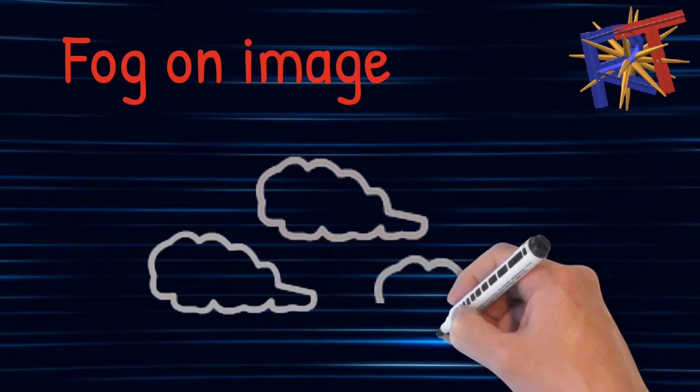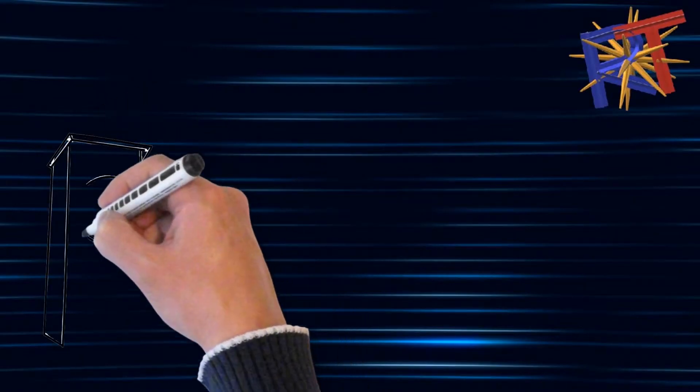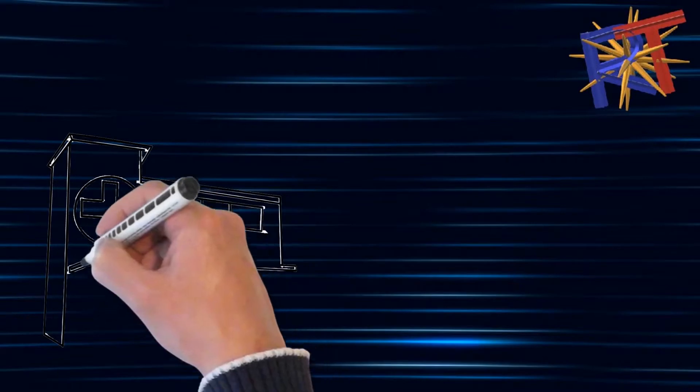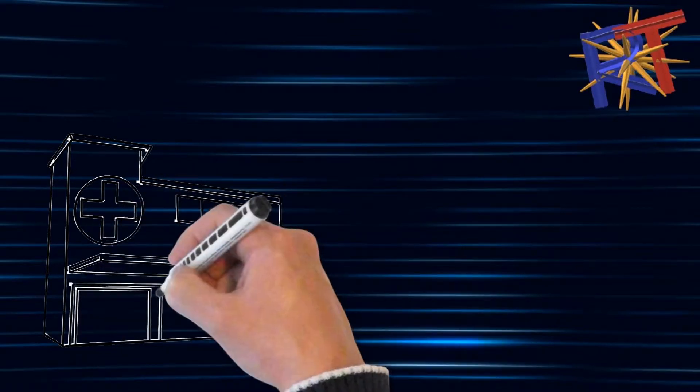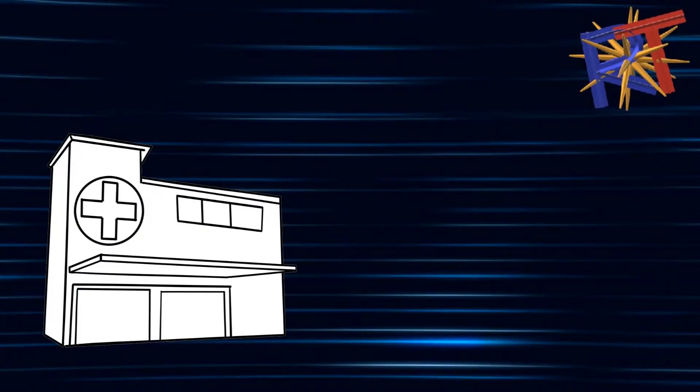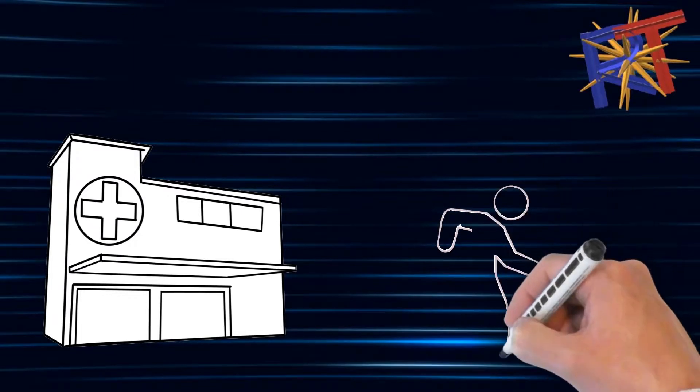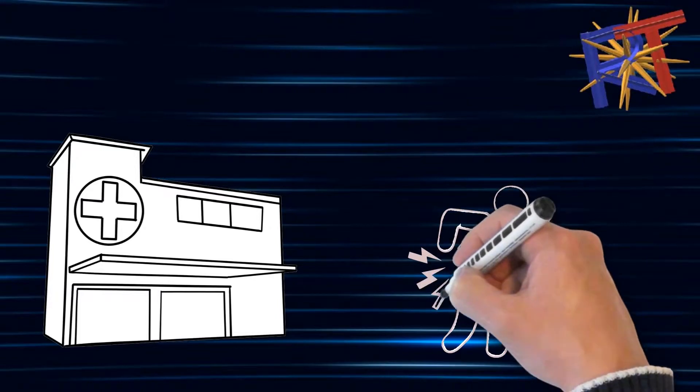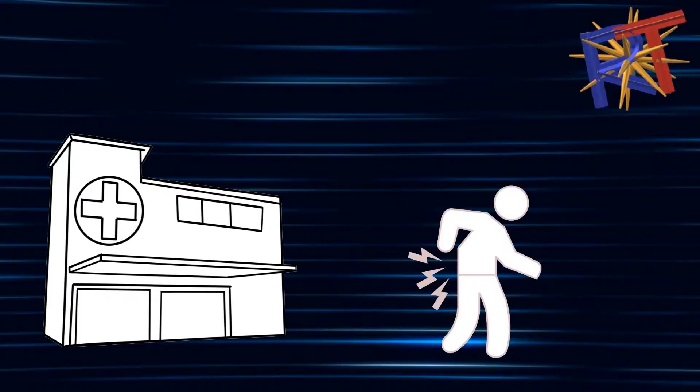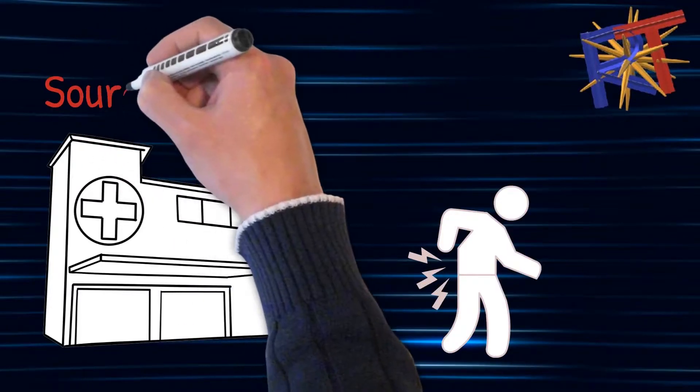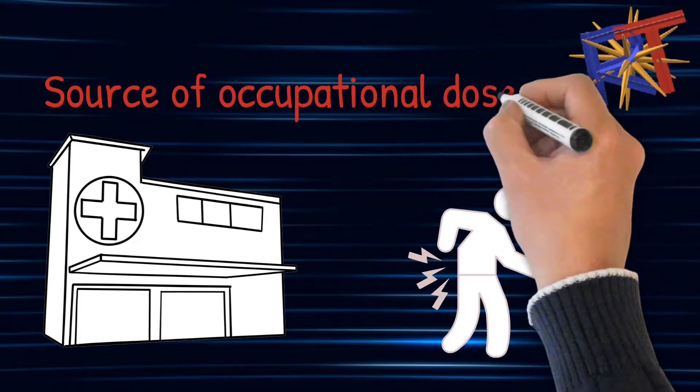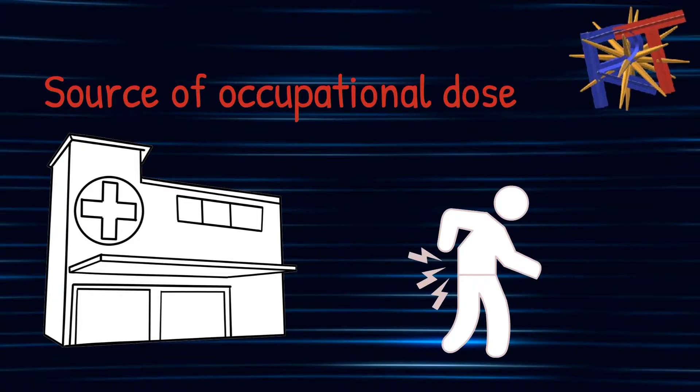If a low contrast foggy film doesn't bother you, one thing that will sway you from using appropriate kiloelectron volts or kilovoltage peaks when completing your x-rays is the occupational dose. The main source of occupational dose comes from the Compton effect.